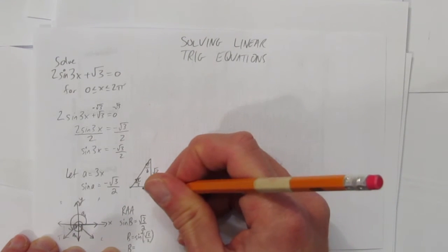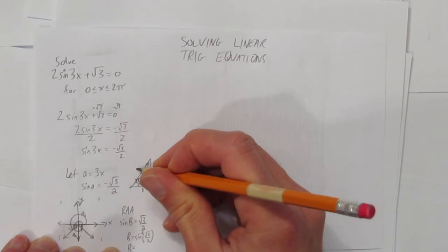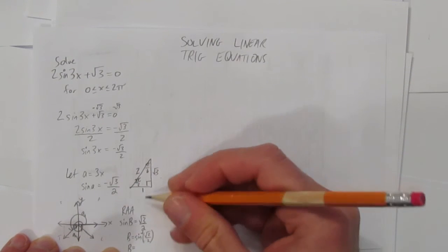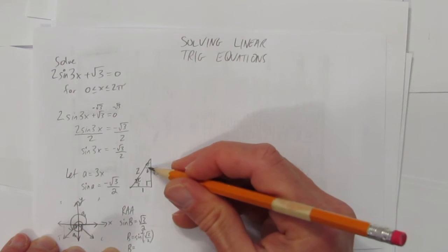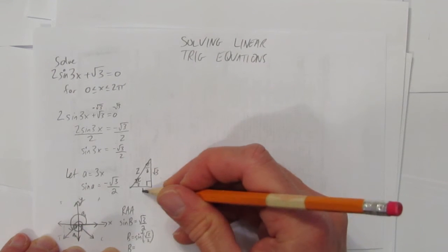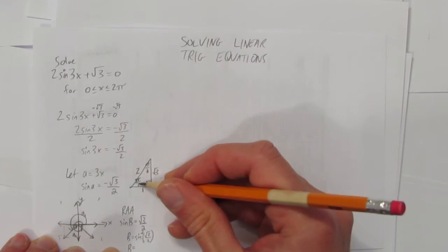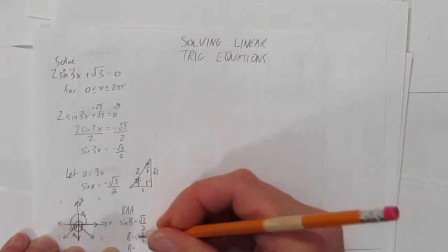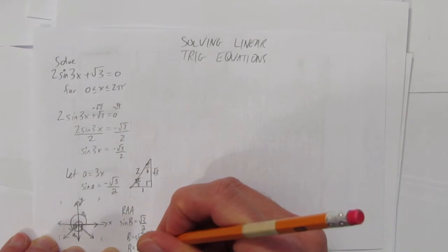This side is the smaller angle and it matches the little side. The biggest side of all, the hypotenuse, is 2. Sine is opposite over hypotenuse. Which of these angles opposite over hypotenuse is √3/2? The answer is clearly π/3. Its opposite is √3, its hypotenuse is 2. So the related acute angle is π/3.